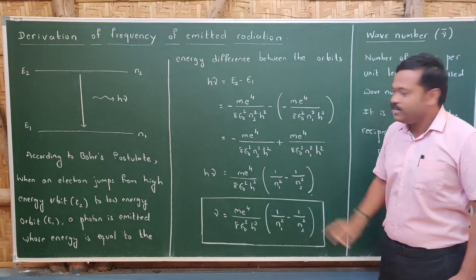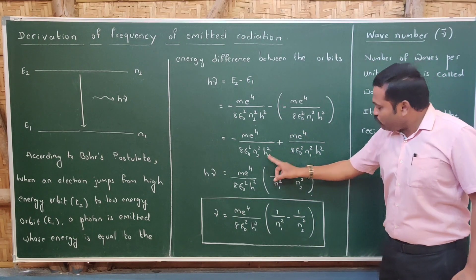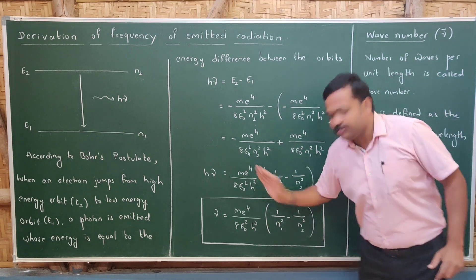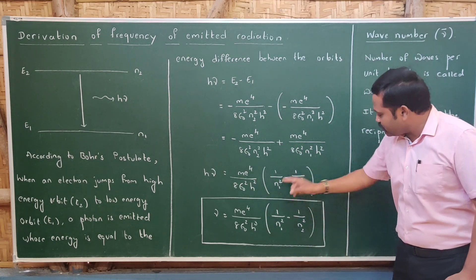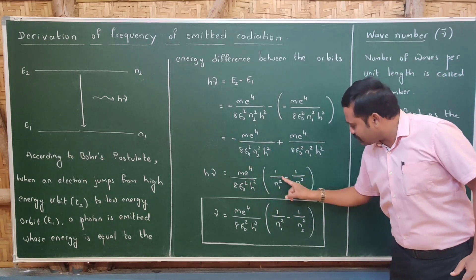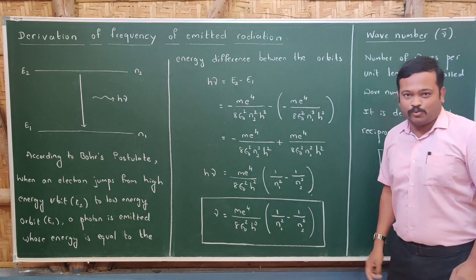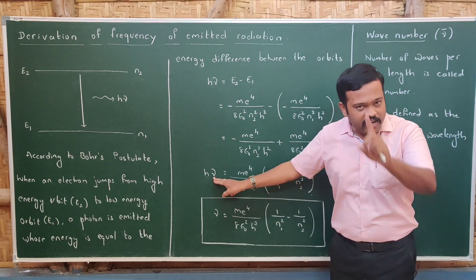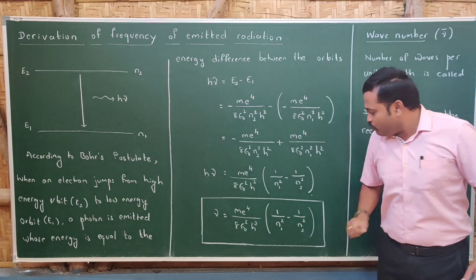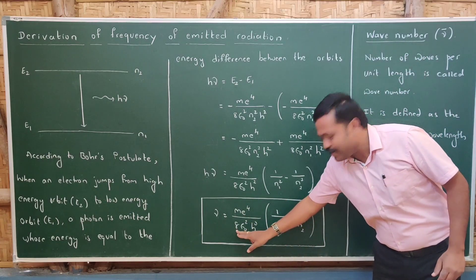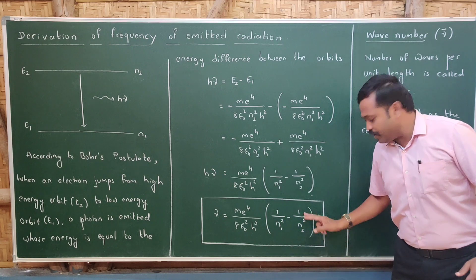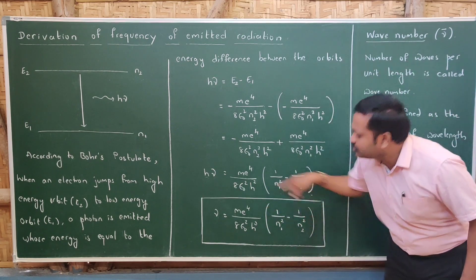Taking me⁴ divided by 8ε₀²h² as common outside the bracket, what remains inside is 1/n1² minus 1/n2², and this is the expression for hν. To get the frequency ν, we move h to the other side, giving: ν equals me⁴ divided by 8ε₀²h³, multiplied by 1/n1² minus 1/n2². This is the expression for the frequency of the emitted radiation.